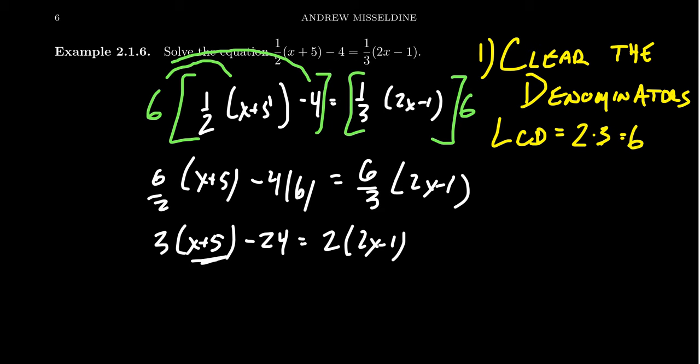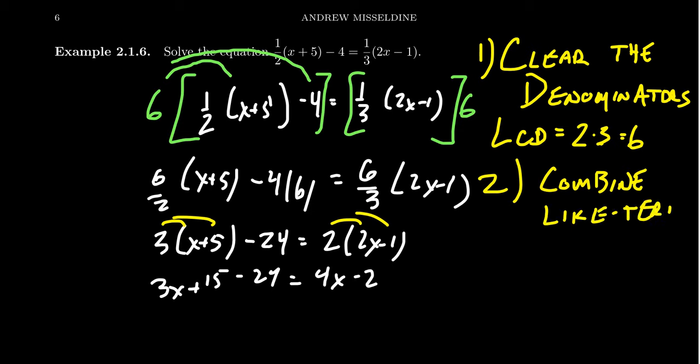We distribute the six on the left hand side. This gives us 6/2(x+5) - 24, and the right hand side will look like 6/3(2x-1). When you distribute, when you multiply by a product, you're only going to multiply one of the factors, and the factor you want to multiply by is the fraction. Notice that six divided by two is three. So we get 3(x+5) - 24, and six divided by three is two, so we get 2(2x-1). Now, these factors are themselves sums and differences, so at this stage we can distribute the three and distribute the two, and we end up with 3x + 15 - 24, and on the right hand side 4x - 2. Everything above this line was to clear the denominators. There's no more fractions. Now we're in a situation where we want to combine like terms together.